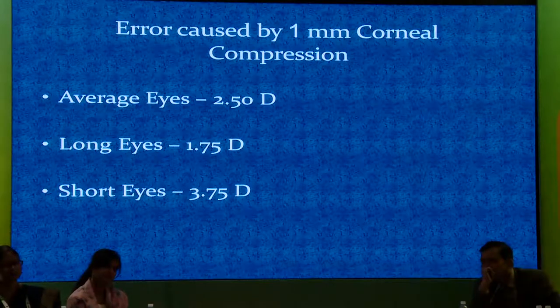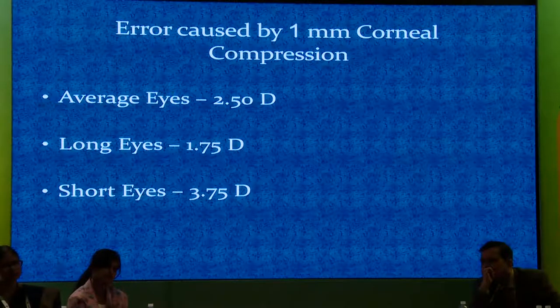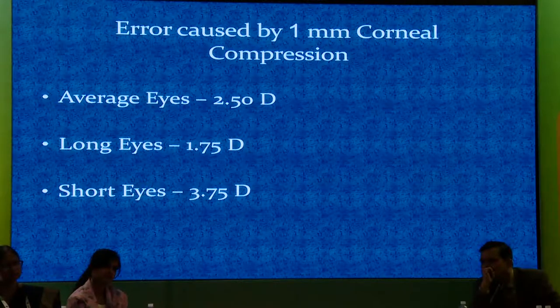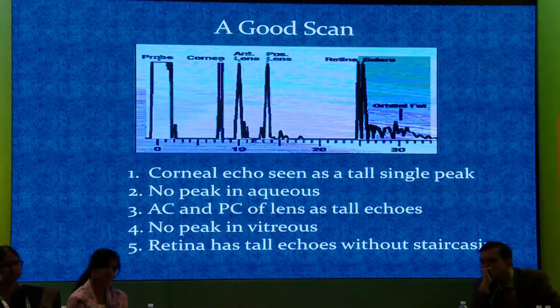If you compress the cornea by one millimeter, on an average eye you will have an error of 2.5 diopters. In long eyes you will have an error of 1.75, and in short eyes you will have an error of 3.75.